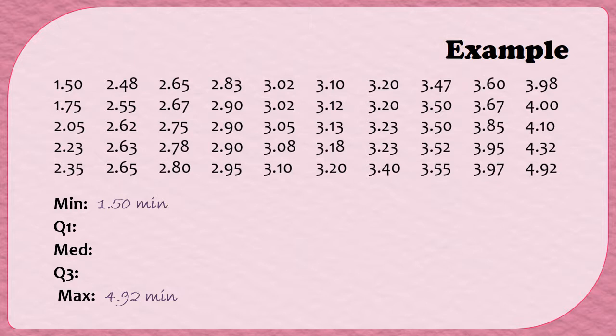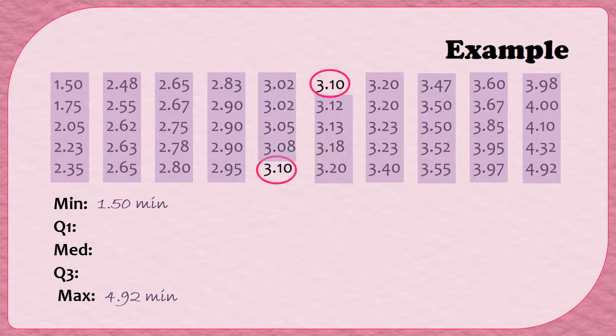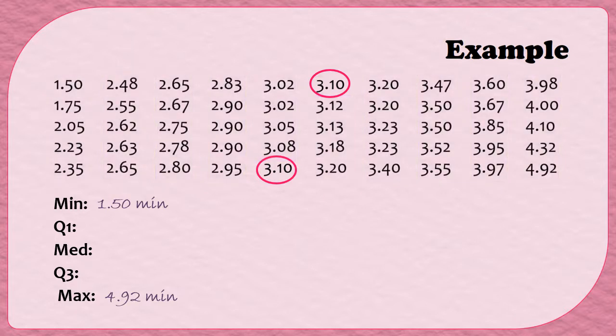To get the median, we're going to have to find the number or numbers in the middle of the data set. So because the values are in order of the columns, I'm going to follow the columns until I get to the center. Now in this case, the value that's in the middle is 3.10 in both numbers, so if I add 3.10 to 3.10 and then divide by 2, I'm going to get 3.10. So the median of this data set is 3.10 minutes.